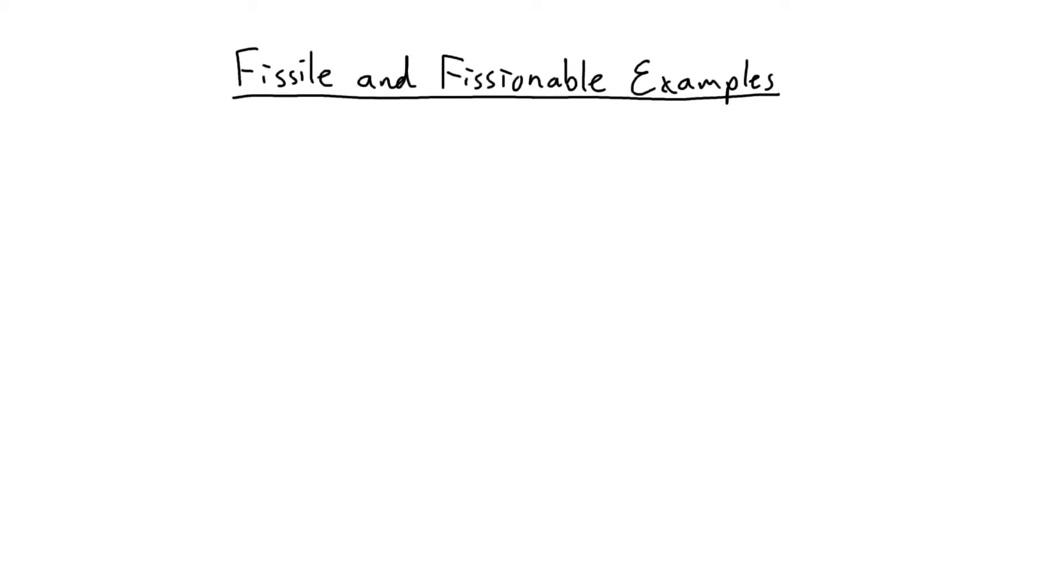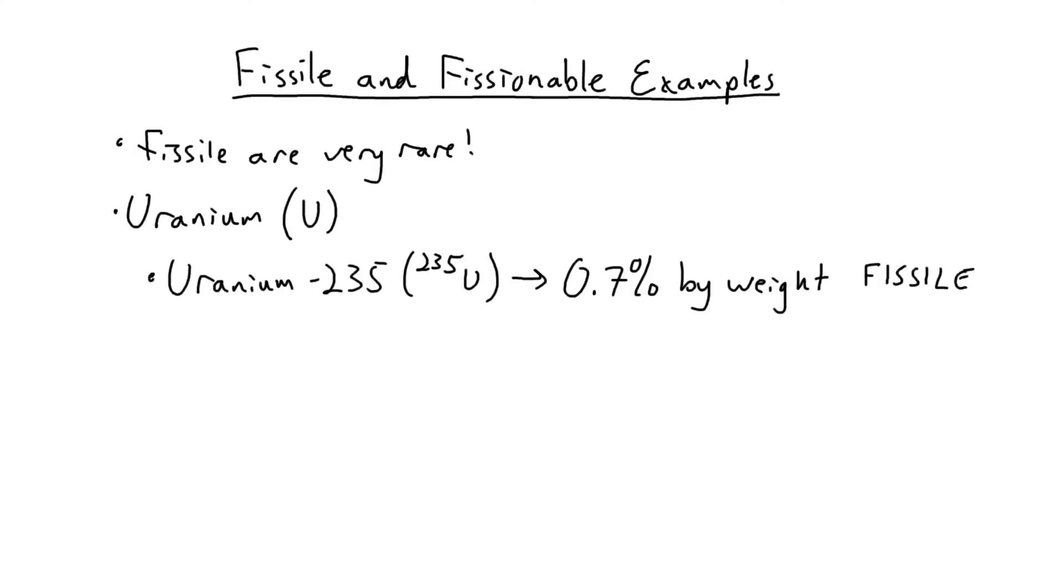So what are some examples of fissile and fissionable isotopes? First off, fissile isotopes are much rarer than fissionable isotopes. For uranium, the fissile isotope uranium-235 makes up just about 0.7% of the uranium found in nature.